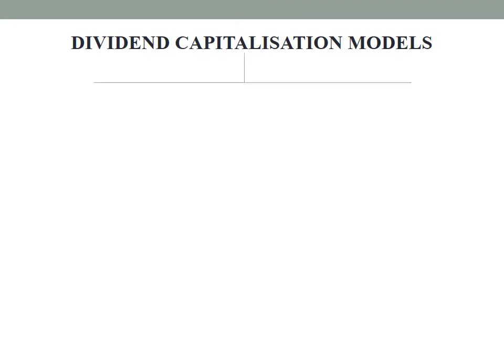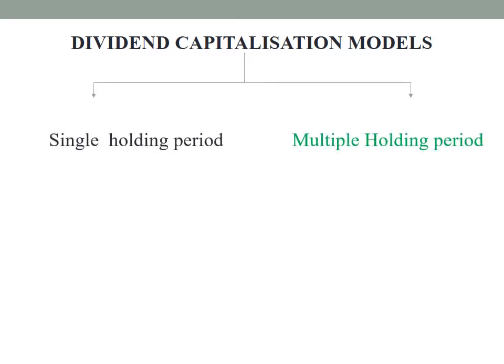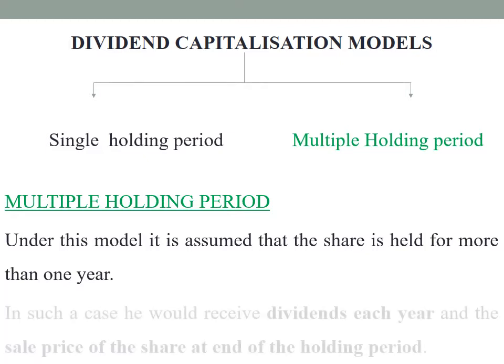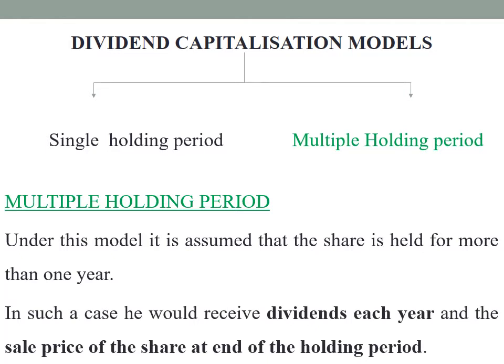The second type of model under the dividend capitalization model is the multiple holding period. Under this model it is assumed that the share is held for more than one year. In such a case, the shareholder would receive dividends each year and the sale price of the share at the end of the holding period.